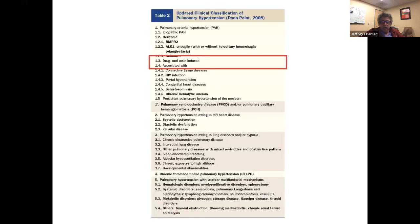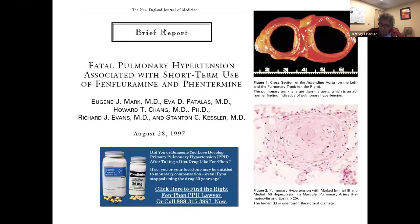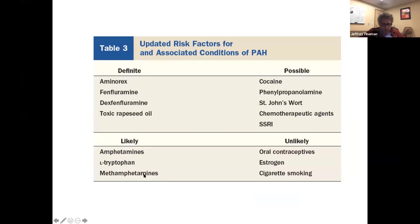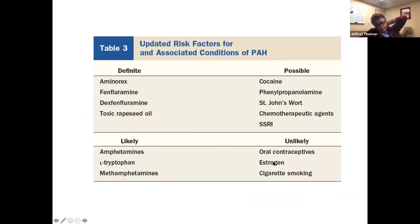Regarding drug and toxin-induced disease: appetite suppressants like fen-phen were associated with pulmonary hypertension and pulled from the market. Methamphetamines and some other toxins are definitively associated with pulmonary hypertension. Estrogen-containing contraceptives are unlikely to be a sole etiology of pulmonary hypertension, but due to their procoagulant effects, we do not have our female patients utilize estrogen-containing oral contraceptives.